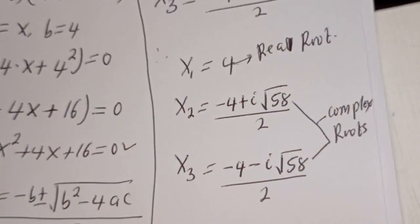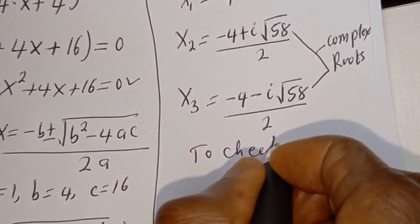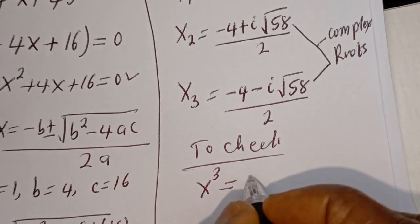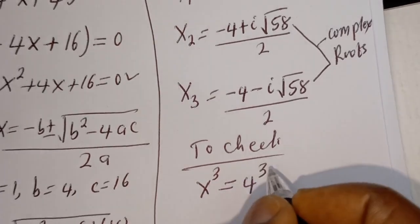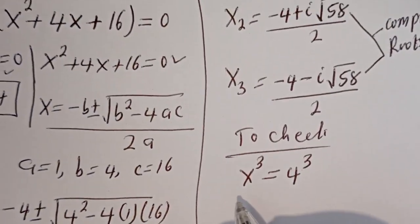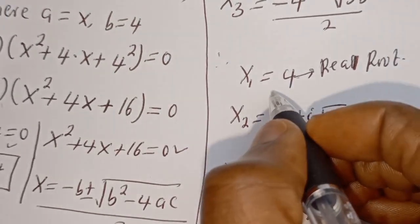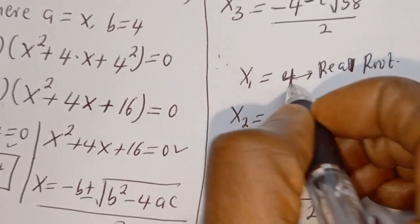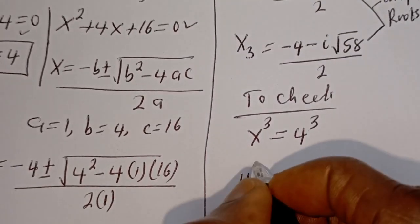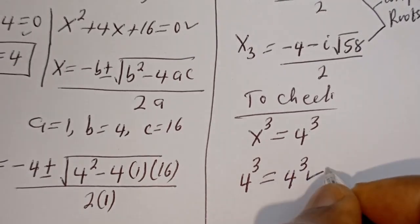We can check to confirm if our answer is right or wrong. To check: we have s to the power of 3 is equal to 4 to the power of 3. When s is equal to 4, using the real root, the left hand side 4 to the power of 3 is equal to the right hand side 4 to the power of 3, which is true.